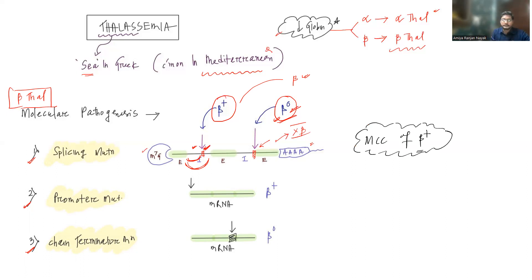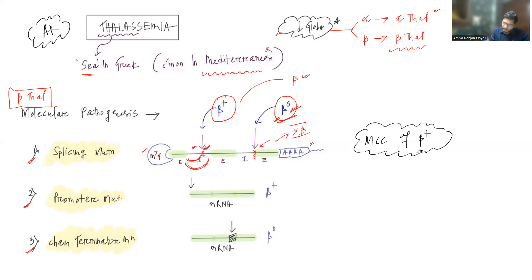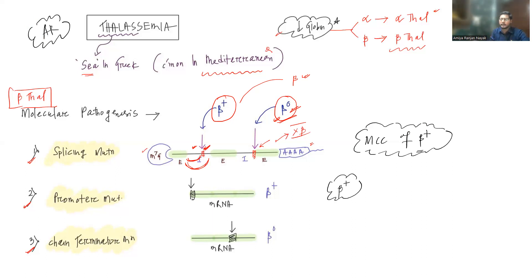Thalassemia is also an autosomal recessive condition, similar to sickle cell disease — all hemoglobinopathies are autosomal recessive. Regarding promoter mutations: the promoter is the area from where transcription starts. In promoter mutations, some amount of translation is still possible, so there will be reduction in beta globin production. This also causes a beta plus type of phenotype.